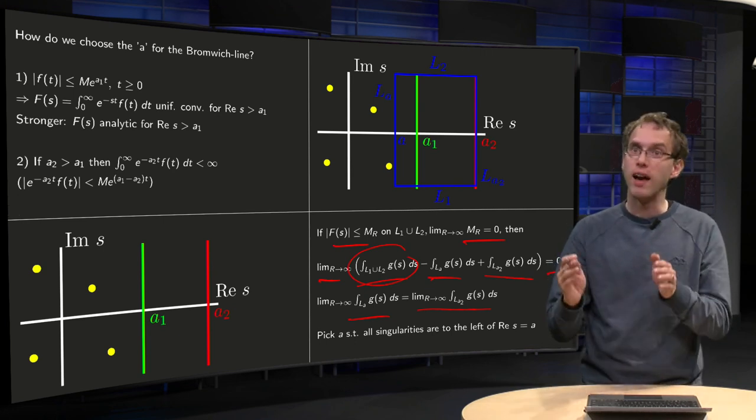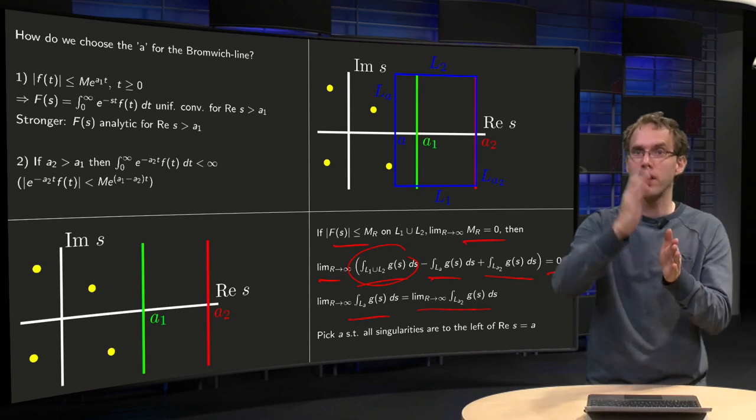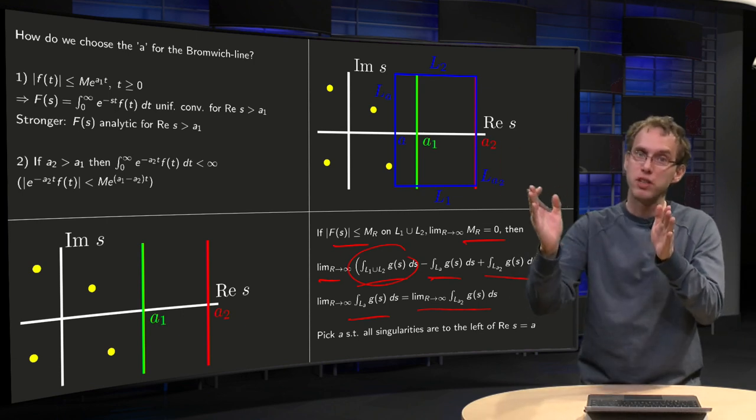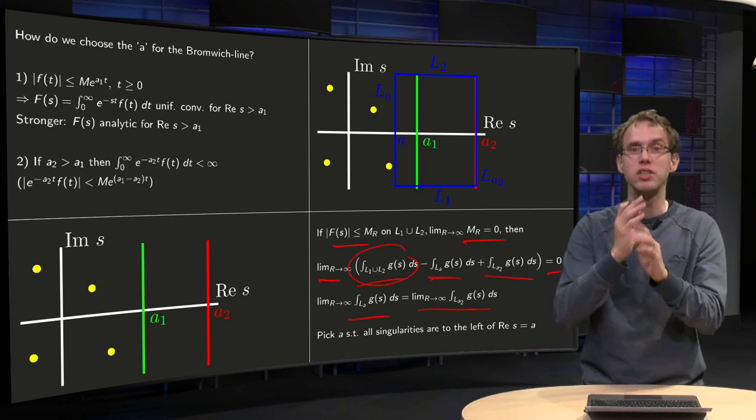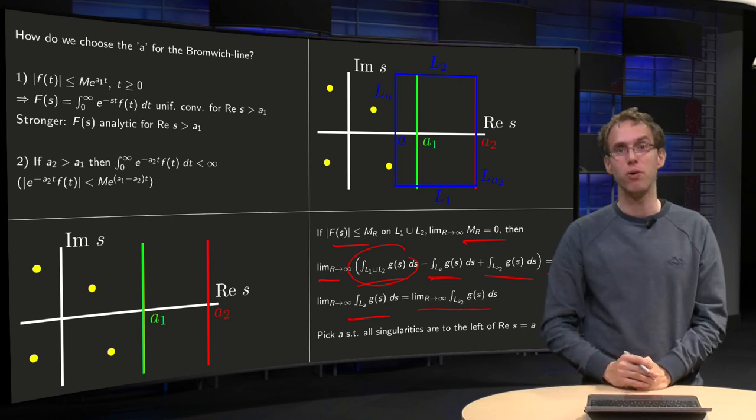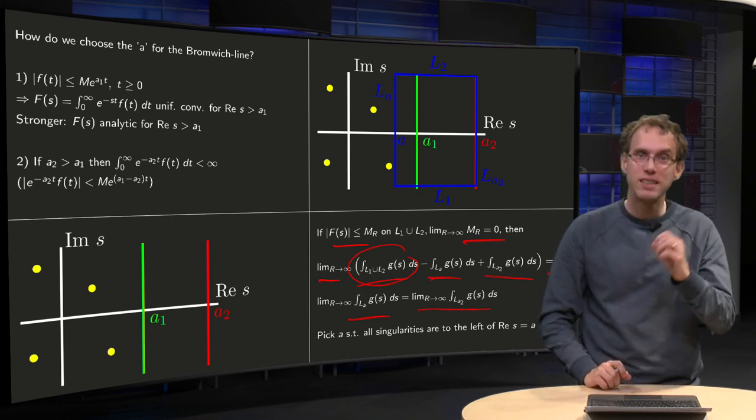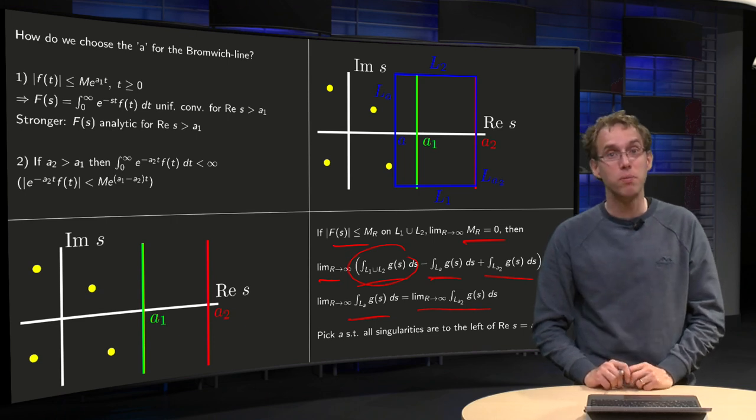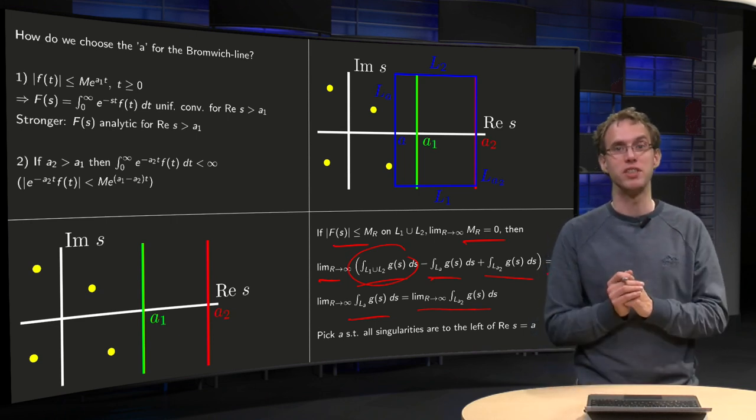So that means that any line, wherever you put your a, will do the job as long as you stay to the right of all your singularities. So that is how you can choose your a from your Bromwich integral.